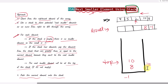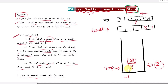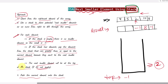Now we work with the element 2. The stack is not empty, so we check if the stack top is greater than or equal to 2. It is, so we pop 10. The new top element is 8, which is also greater than or equal to 2, so we pop that too. Now the stack is empty, so the result will be negative 1. Then we push 2 onto the stack.